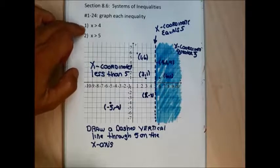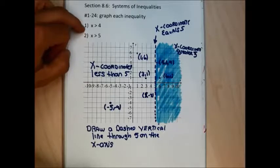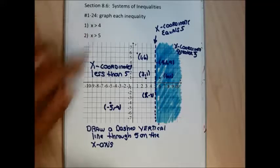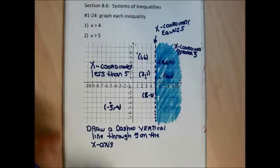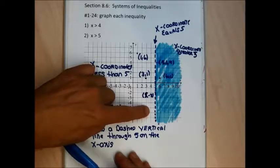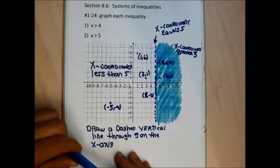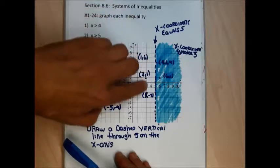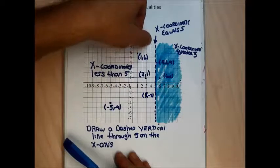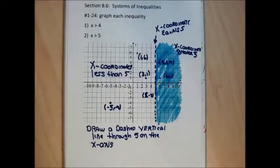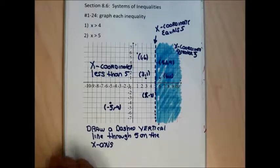For your problem 1, you're going to do something similar — identify all the points on the graph whose x-coordinates are greater than but not equal to 4. You'll start by drawing a dashed line through 4 on the x-axis, then decide which side to shade. Points to the left will have x-coordinates less than 4, points on the line equal to 4, and points to the right will have x-coordinates greater than 4.